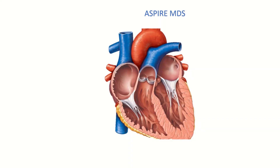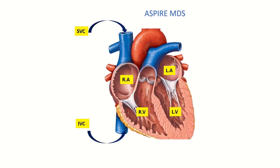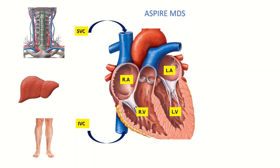Hello everyone, I am Dr. Bahamik Joshi from Aspera MDS. In this video we will discuss two types of heart failure: right-sided and left-sided heart failure. The right side of the heart receives blood through the superior and inferior vena cava, which drain venous blood from the face and head via the jugular veins, from the liver, the organs of the GI tract, and the peripheral body parts.